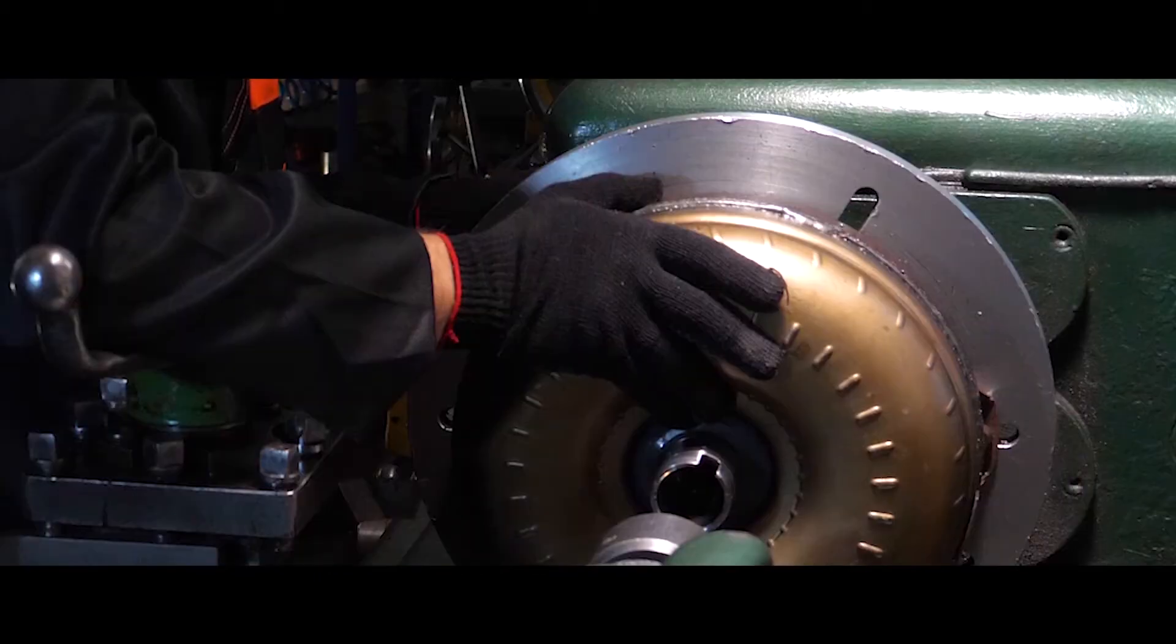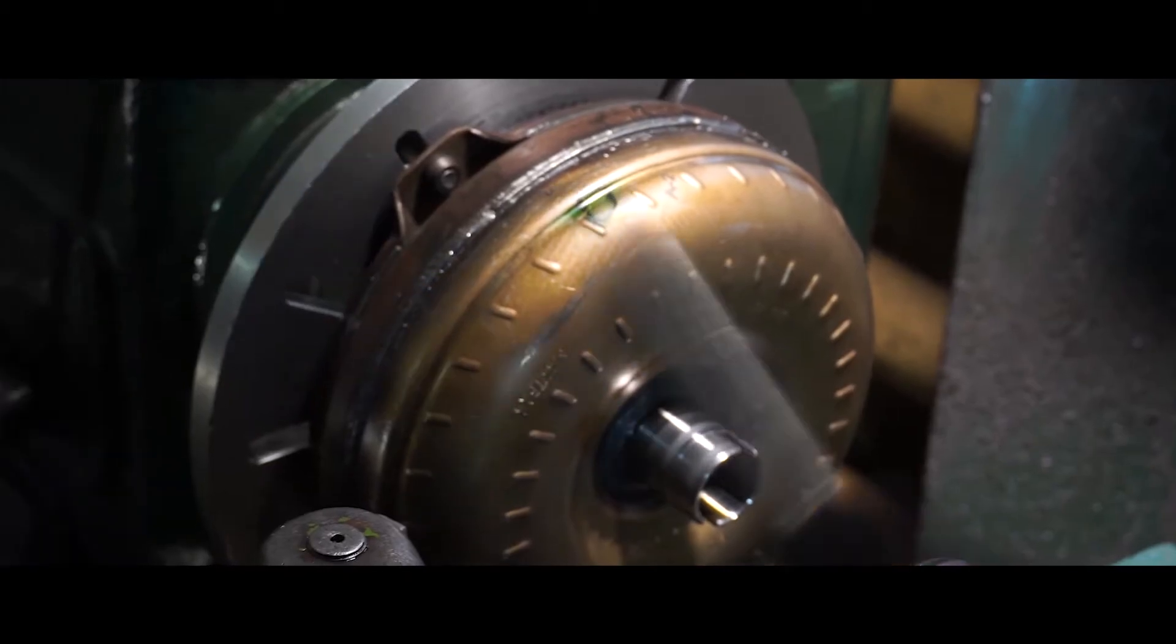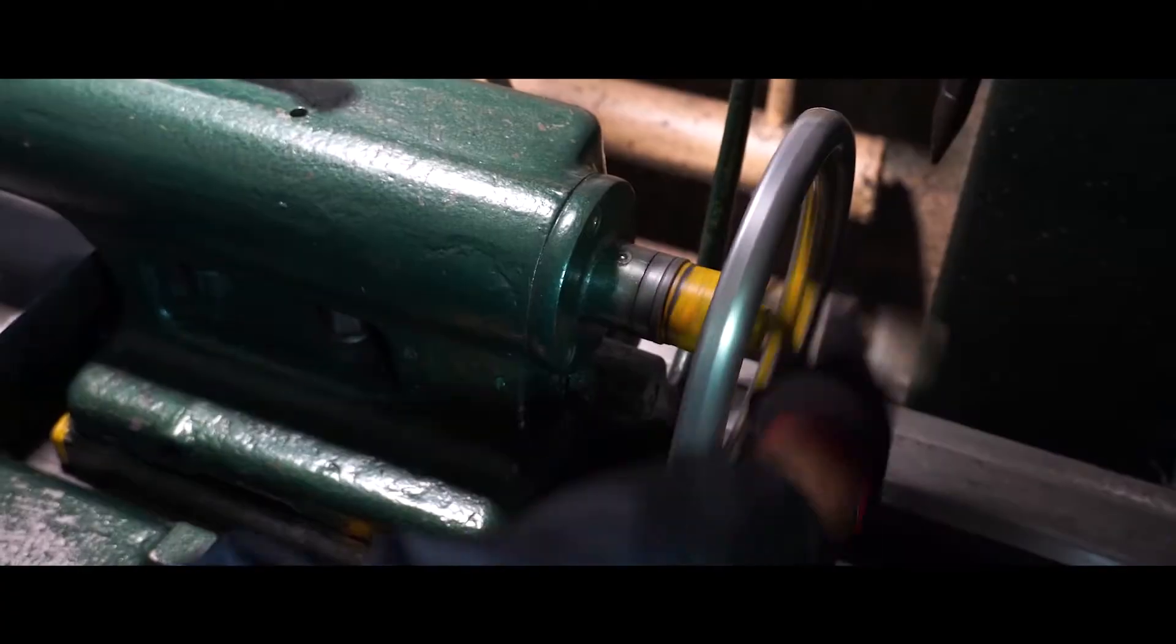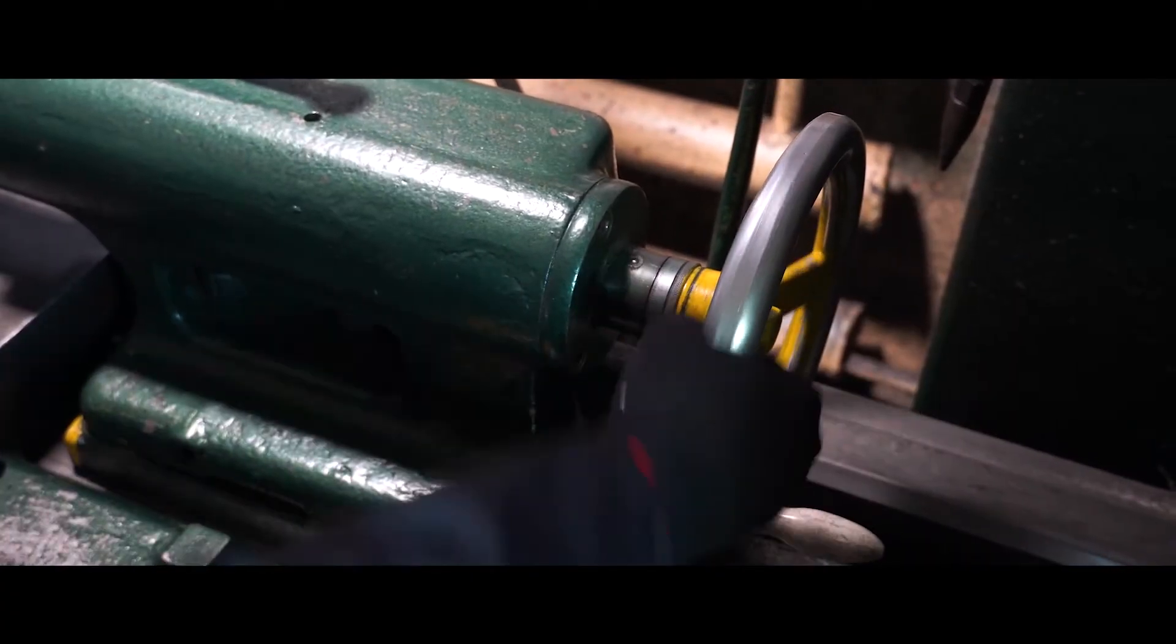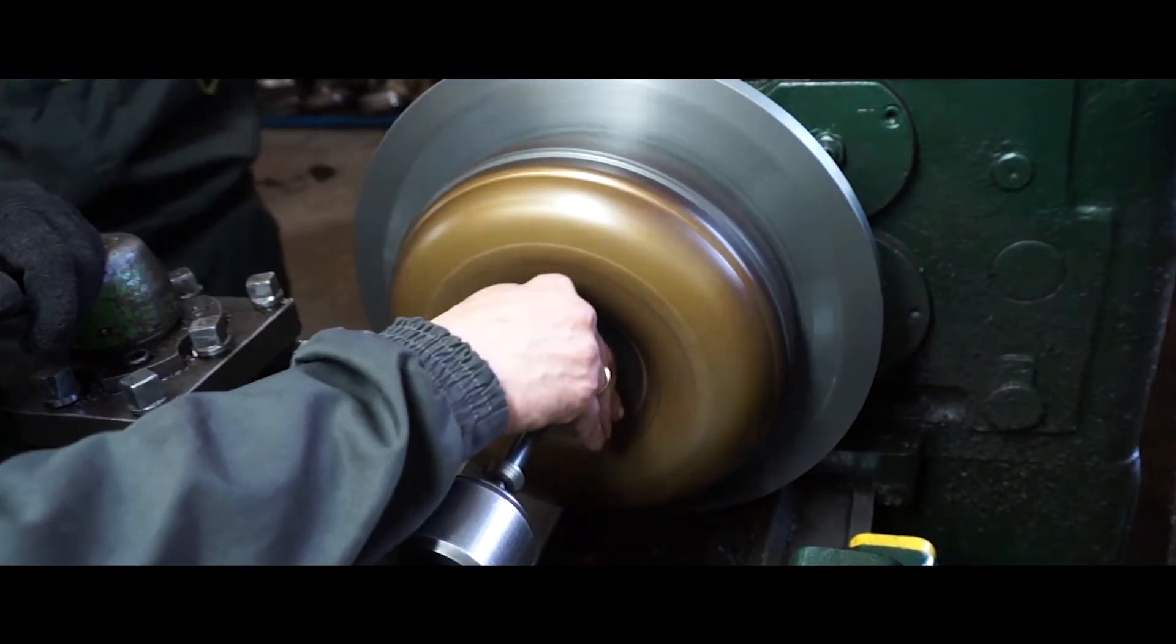The first stage in the repair of this Series TC is cutting its body. For this, the torque converter is mounted on a lathe using special equipment. After installing on the machine, the torque converter neck should be wrapped to reveal deep scratches, cavities, or dents.